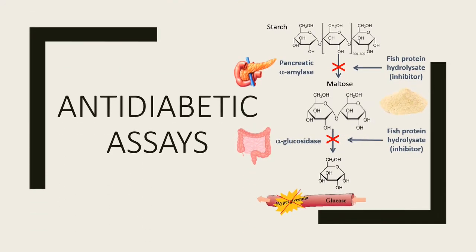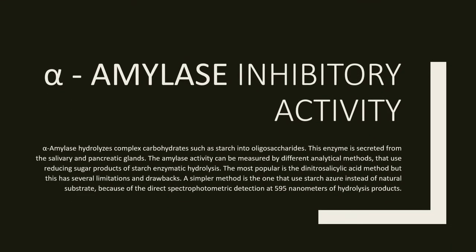Many studies underline the beneficial effect of bioactive fish peptides in type 2 diabetes. The fish peptides retard the absorption of glucose by inhibiting carbohydrate-hydrolyzing enzymes such as pancreatic alpha-amylase and alpha-glucosidase. The inhibition of these enzymes delays carbohydrate digestion and protracts overall carbohydrate digestion time, resulting in a reduction in glucose absorption rate and consequently dulling the postprandial plasma glucose rise.